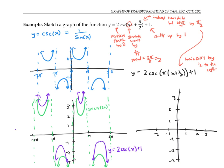So that means the vertical asymptotes will actually be at negative a half, a half, one and a half, and so on.